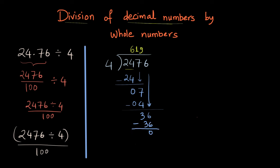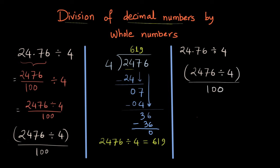So the quotient when we divide 2476 by 4 is 619. Since the original problem was 24.76 divided by 4, and we showed this equals 2476 divided by 4, all divided by 100, we already got 2476 divided by 4 equals 619 through long division.